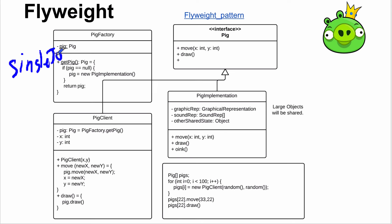There is only one PigImplementation — the shared state. Each new PigClient just has a reference to that one pig, so you have many PigClients but each references the same graphical representation via the pig variable. When you call move() on a PigClient, it uses delegation and calls pig.move(). This call may or may not change the graphical representation.